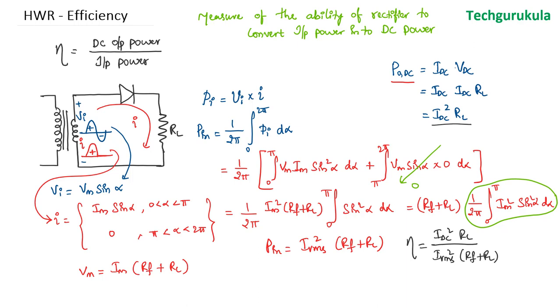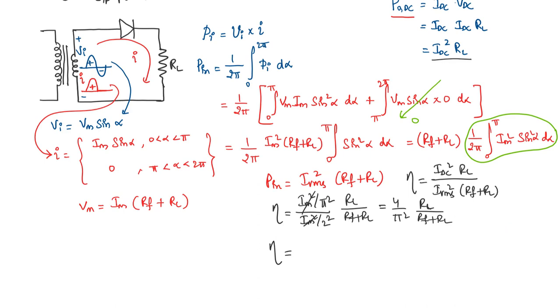We know what is I_DC, which is I_m by π and I_RMS is I_m by 2. So the efficiency can be written as I_m square by π square over I_m square by 2 square times R_L over R_f plus R_L, which is equal to 4 by π square times the ratio of R_L to R_f plus R_L.